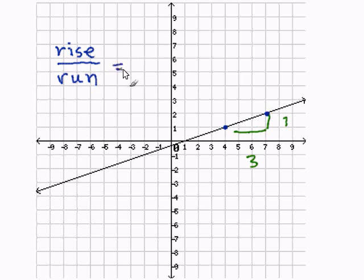So, our rise, which is the vertical direction, is one. And our run, the horizontal direction, is three.